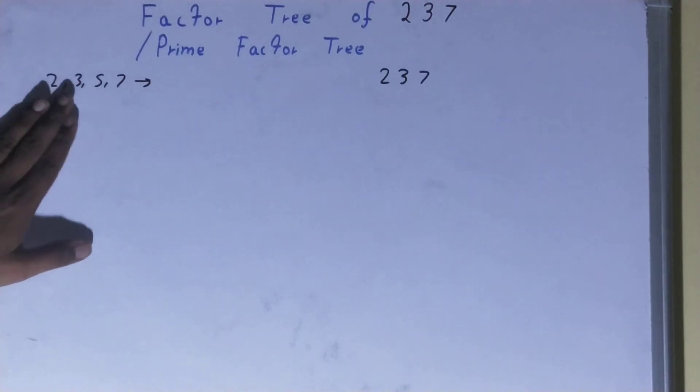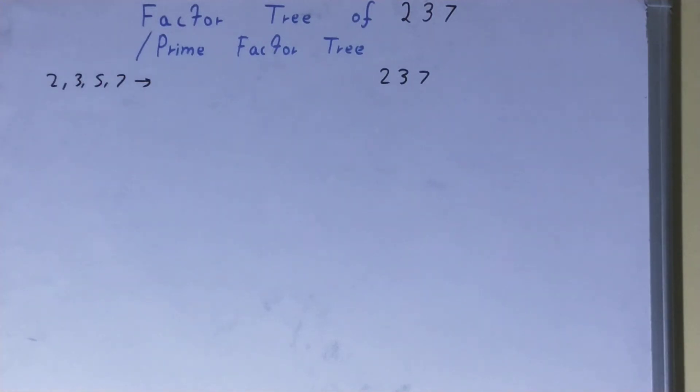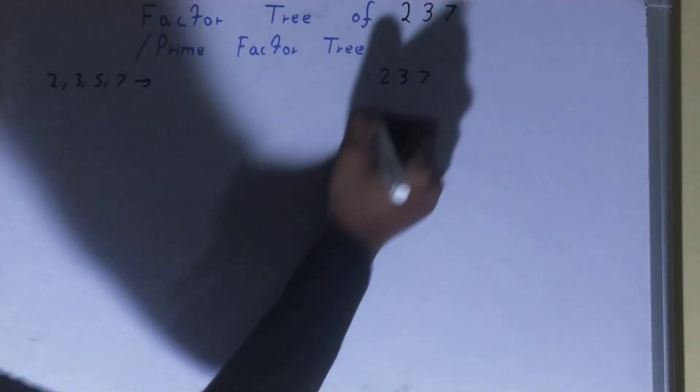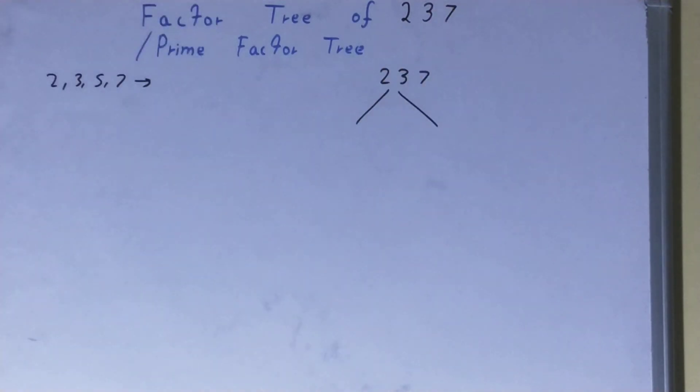All right, so what we do is we factorize the number into a group of two or set of two, and the rule is one of the numbers should be prime. Because of this, we check: is the number 237 divisible by 2? No. Is it divisible by 3?